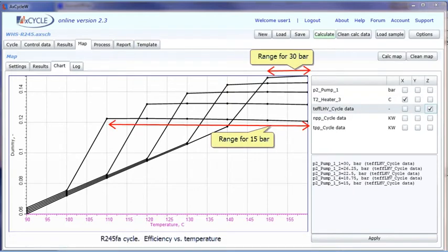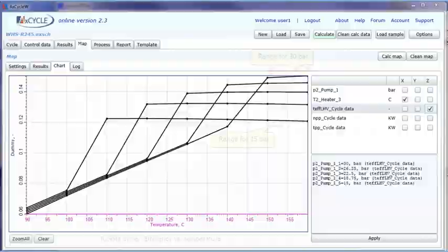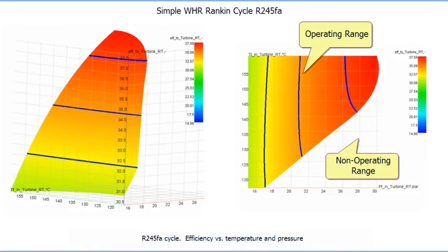Efficiency versus temperature plots show that the operating range narrows when pressure is increased. It is convenient to present map results as a 3D surface where X and Y axes are for pressure and temperature, and the Z axis is for power or efficiency. After points with fluid quality less than unity are eliminated, a color contour shows the operating range.